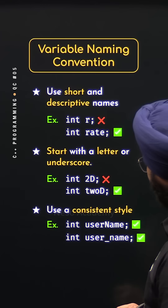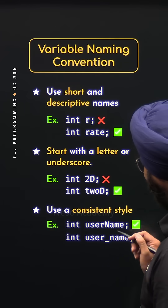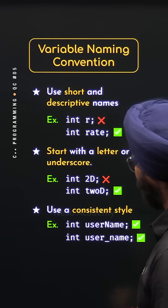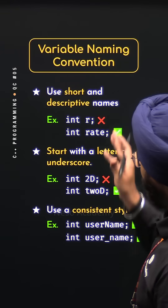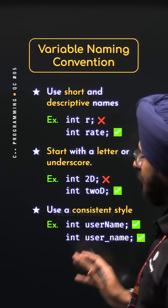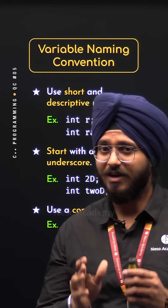Or you can follow the snake case convention, where words are separated by underscores — this one is also valid. So these are some of the variable naming conventions that you can follow.